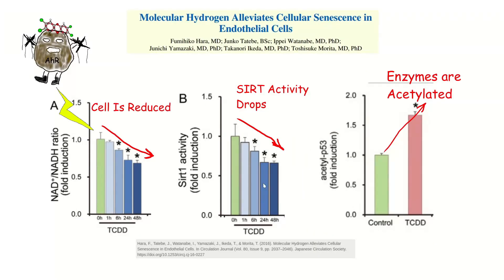This again just shows: NAD+ levels go down, Sirt1 activity drops — it's an NAD+-dependent deacetylase. And when deacetylase activity slows down, acetylation goes up.